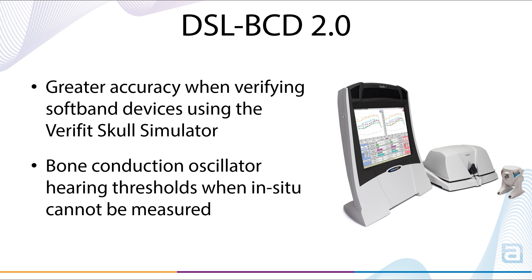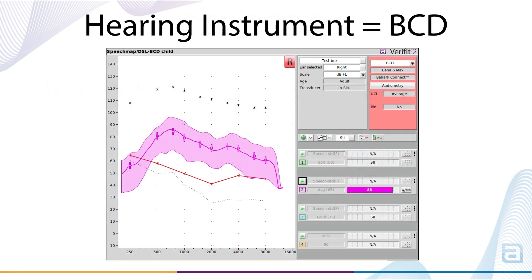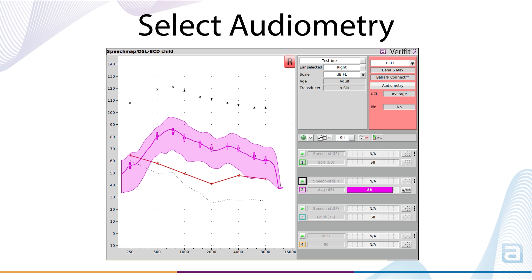This is made possible by a new skin transmission loss correction for children and adults. To access SpeechMap for verifying bone conduction devices using the Verifit Skull Simulator, go to the Hearing Instrument menu and select BCD. This selection was previously labeled BAHD.